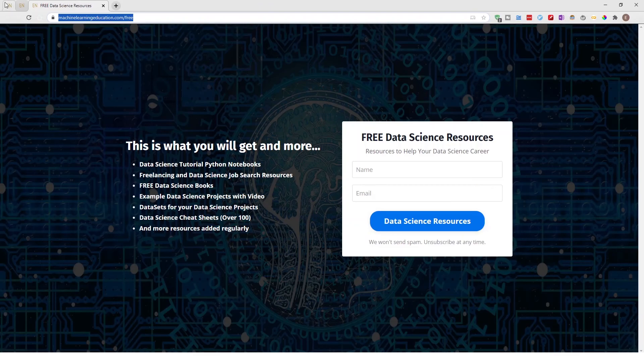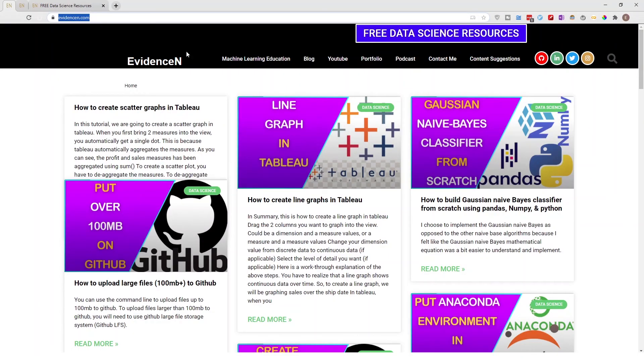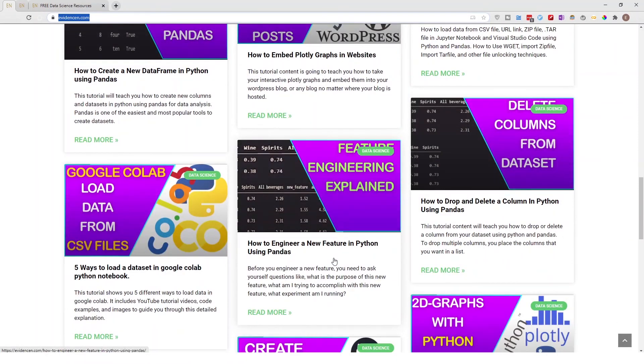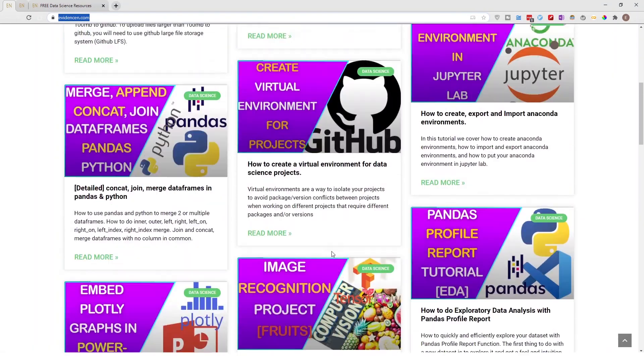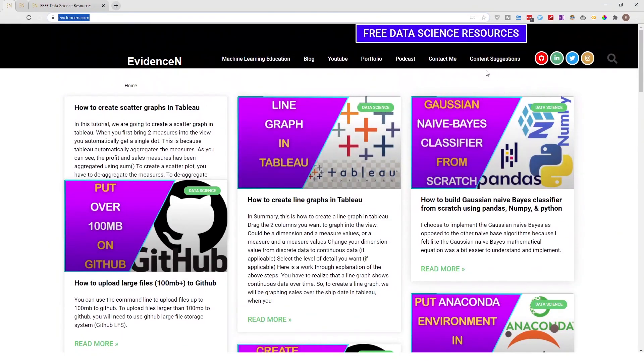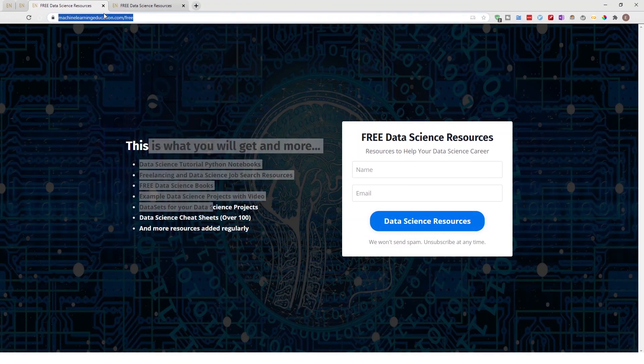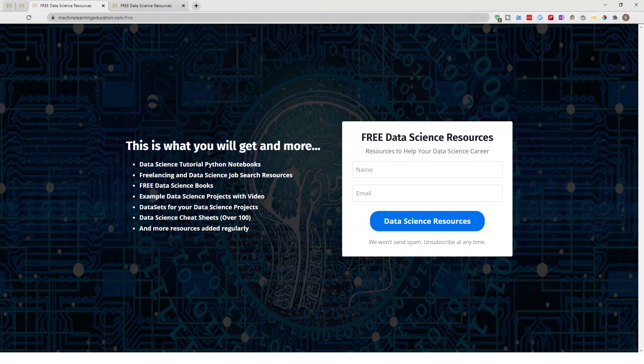You can also visit me online at evidencen.com. This is my primary website where I have my data science blogs. And as time goes by, I'm going to add more and more stuff to my data science blogs. And then if you click on free data science resources, you'll also be able to get to this page. That's machinelearningeducation.com/free. Thank you for watching, and I'll talk to you on the next video. Bye.